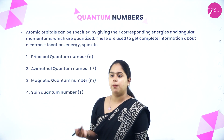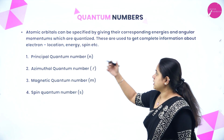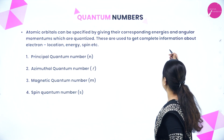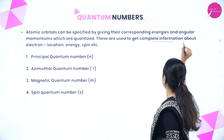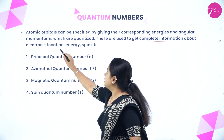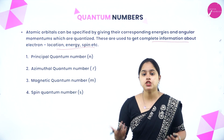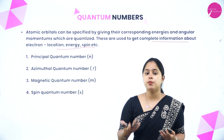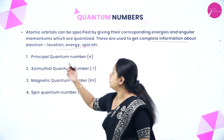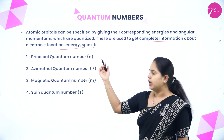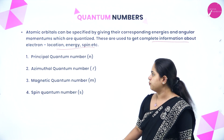Now moving on to quantum numbers. Atomic orbitals can be specified by giving their corresponding energies and angular momentums, which are quantized. Quantum numbers give complete information about the electron — their location, energy, spin, etc. There are four quantum numbers: principal quantum number, azimuthal quantum number, magnetic quantum number, and spin quantum number.